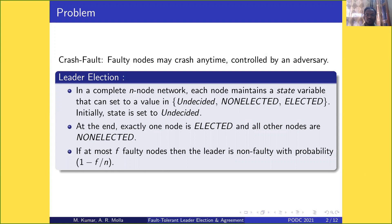At the end, exactly one node is elected and all others are non-elected. If at most f nodes are faulty, then the leader will be non-faulty with probability 1 - f/n.